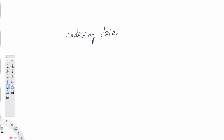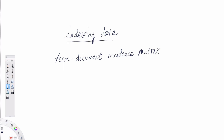The first type of index we'll be talking about uses a form called a term-document matrix, or a term-document incidence matrix. This is a data structure that is going to allow us to do a specific type of querying against our data, which uses something called the Boolean retrieval model.